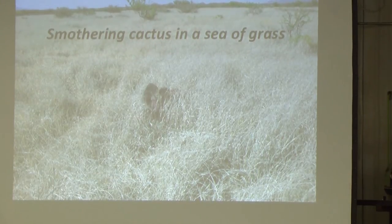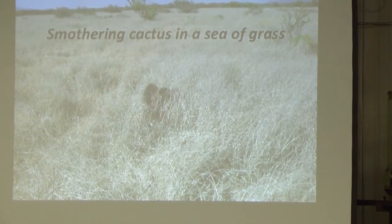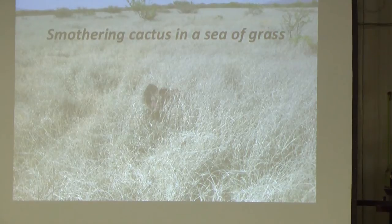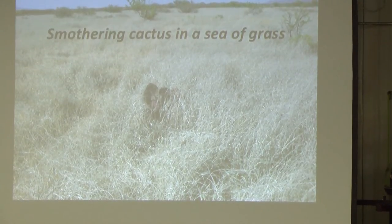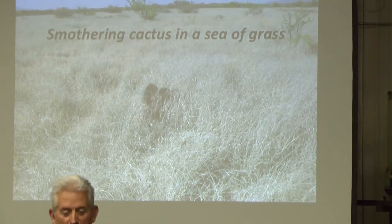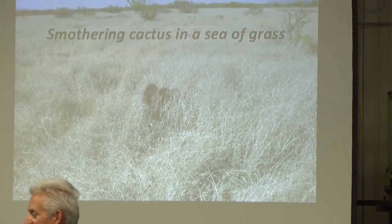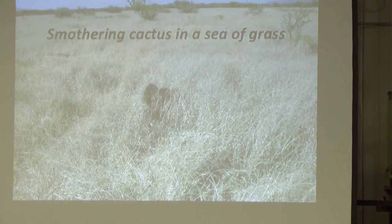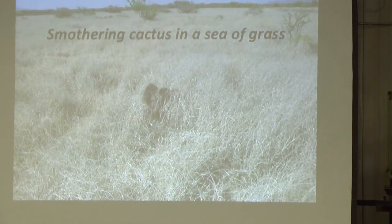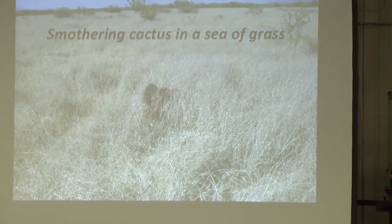There's a book I recommend called 'Sowing the Desert' by Masanobu Fukuoka — he also wrote 'One Straw Revolution.' He actually believed there was no such thing as deserts — that deserts are man-made. He may have a valid argument. Historians say Hannibal crossed northern Africa on elephants. You don't cross a desert on an elephant. There was grass all over northern Africa.